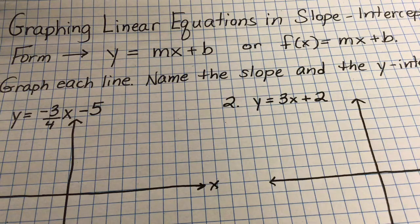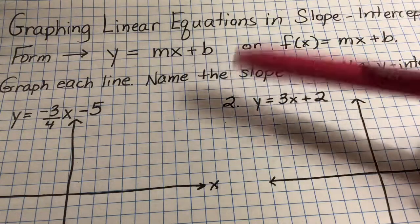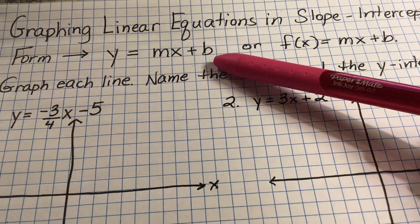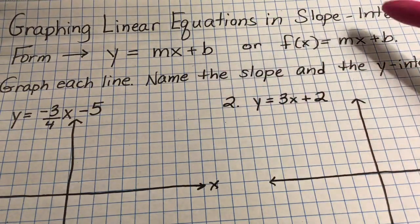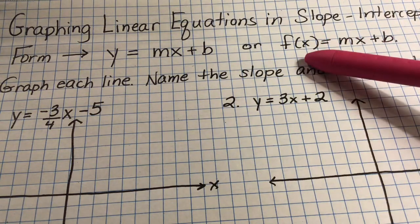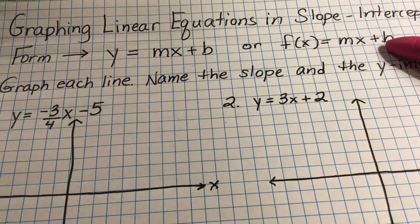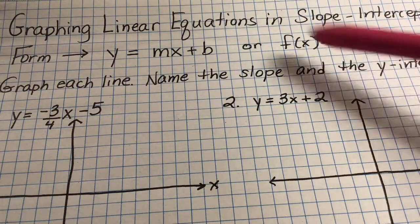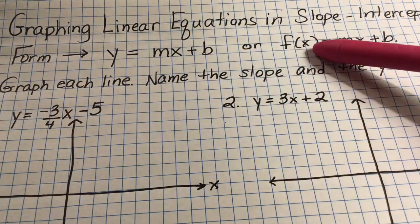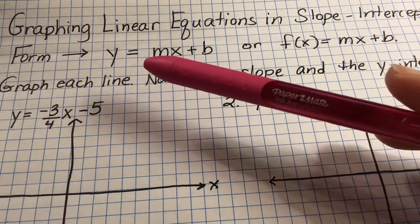Slope-intercept form is written as y equals mx plus b. Here we also have slope-intercept form written in function notation: f of x equals mx plus b. These are equivalent — f of x is the same thing as y.